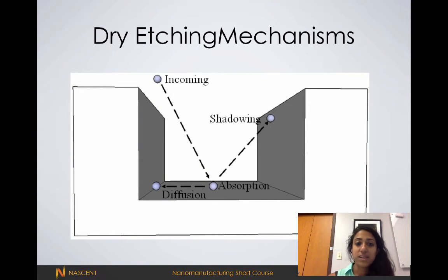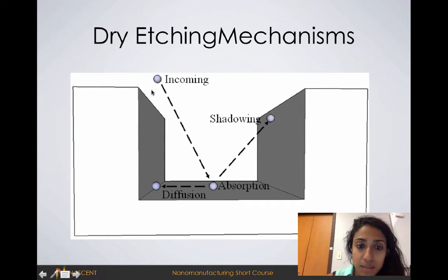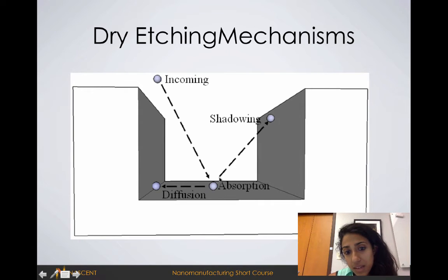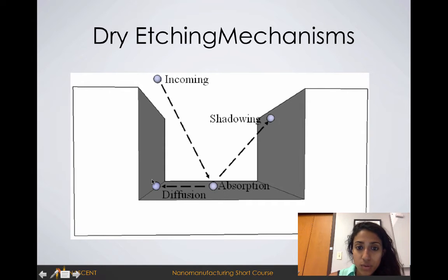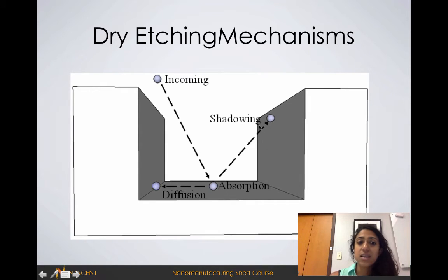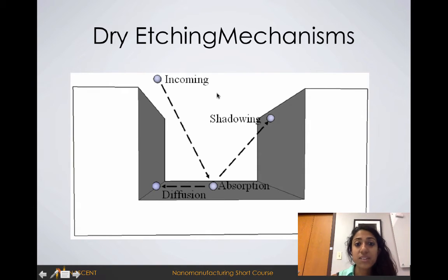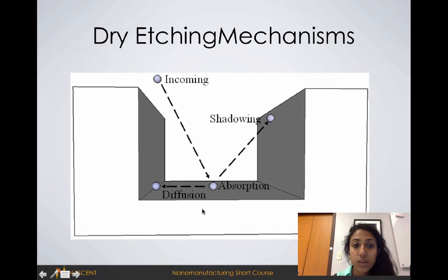When we have these dry etch mechanisms, there are several different things that can happen. An incoming neutral or ion will come and hit the surface, and it can either absorb to the surface, diffuse and move along it, or reflect and bounce off — what's called a shadowing effect. Predicting how an etch recipe will react is actually really difficult because we're trying to predict the behavior of all these incoming ions and neutrals, and they can have all these different behaviors depending on what chemical species it is and what you're trying to etch.